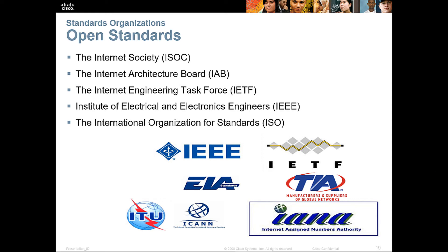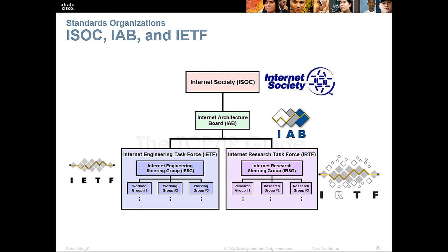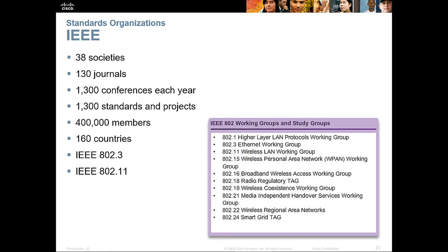There is a structure to these organizations. The Internet Society controls things like the IAB. The IAB includes the IETF — Internet Engineering Task Force — and the Internet Research Task Force. IEEE comprises 38 societies, 130 journals, 1,300 conferences per year, 1,300 standard projects, 4,000 members across 160 countries. IEEE developed two very specific technologies: 802.3, known as Ethernet, and 802.11, known as Wi-Fi. Also 802.16, which is WiMAX.